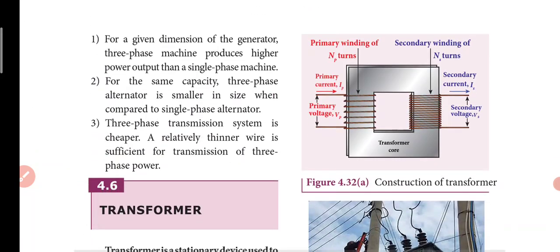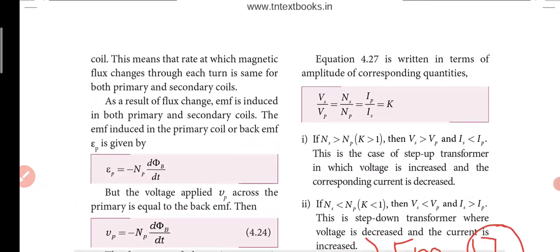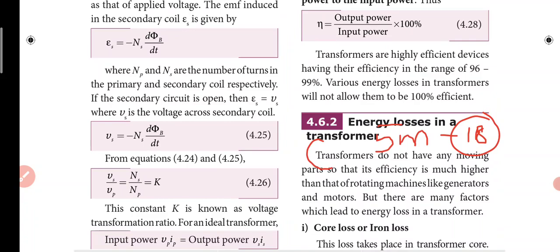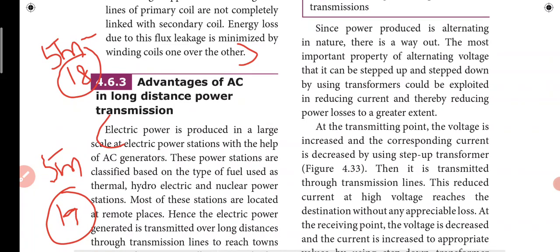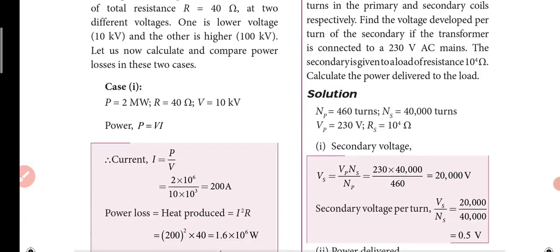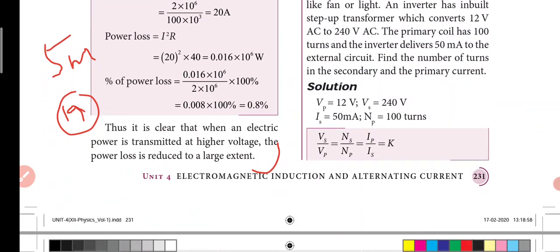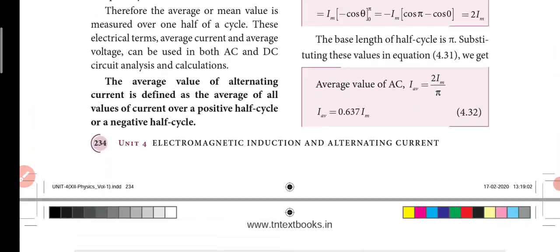Construction and working of transformer - diagram for construction, theory for working with two cases: Ns/Np greater than or less than 1. Energy losses in transformer: 3 points for 3 marks. Advantages of AC for long distance transmission - explain with two case examples showing power loss. When electric power is transmitted at higher voltage, power loss is reduced.